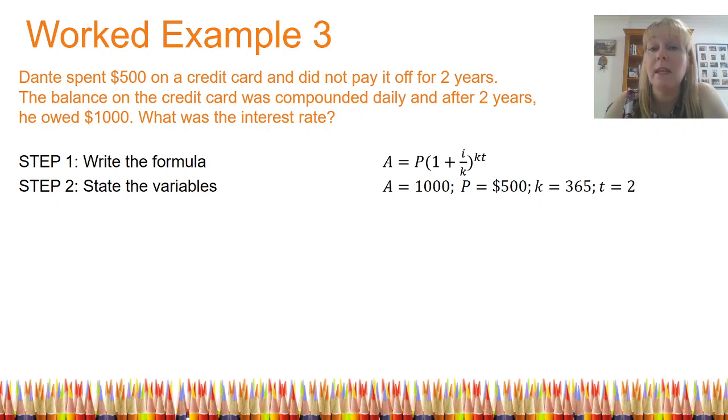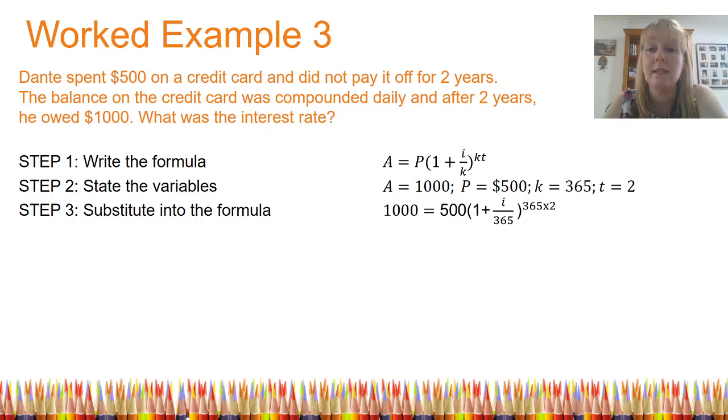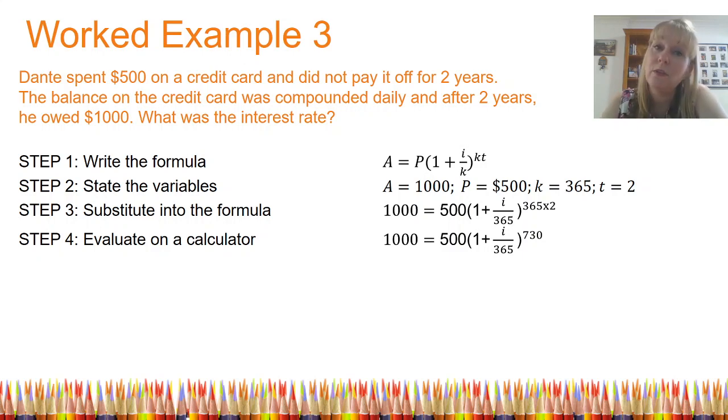Second step, I'm going to state my variables. A is equal to 1,000. P is 500. K is 365. That's the number of compounding periods in one year. And the number of years is 2. T is 2. So now I'm going to substitute this into my formula. Notice I'm looking for i, and i is still stated as a single variable on its own. What I've done is, in my next step, start to evaluate this on a calculator. I'm going to simplify firstly my power. 365 times 2 is equal to 730. Now I'm going to divide both sides by the principal 500.